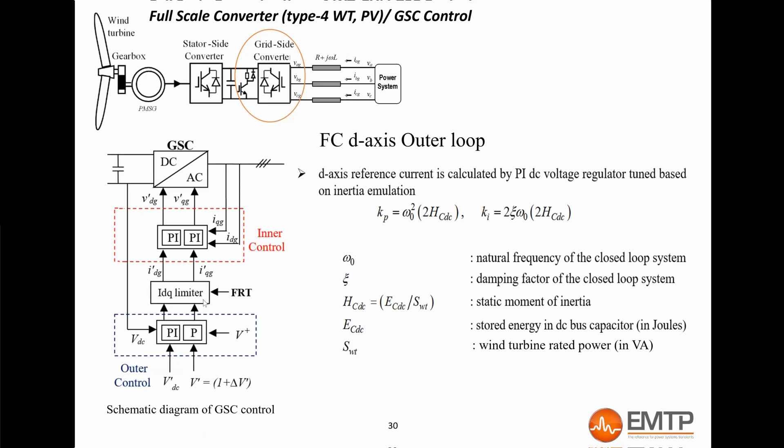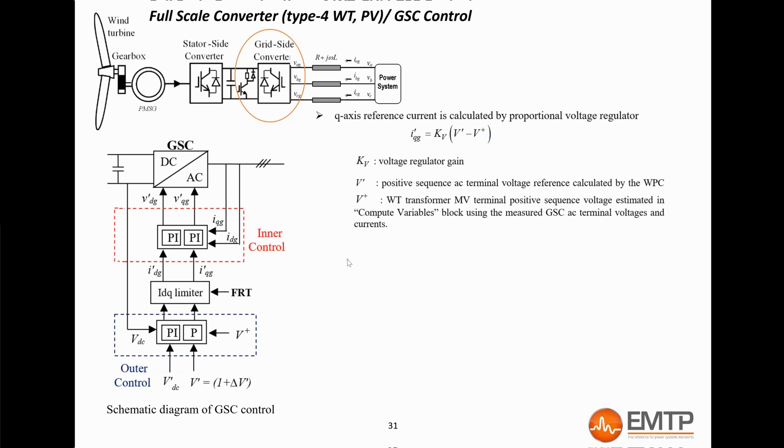The gains of the outer loop PI controller for the D-axis are calculated based on the DC bus capacitance. The equations used are explained here. The Q-axis loop now controls the Q-axis voltage in order to follow the reference sent by the PPC for the park reactive power control. The outer loop produces a Q-axis current reference, which is also limited, and sent to the inner loop, which commands the Q voltage reference. The outer loop here is a proportional controller where the gain is set by user in the mask.